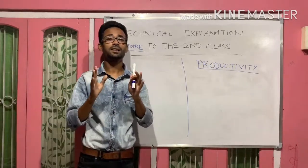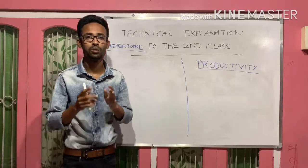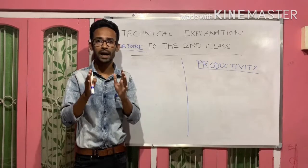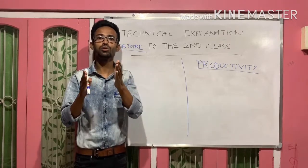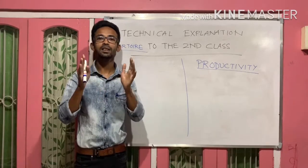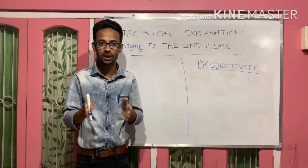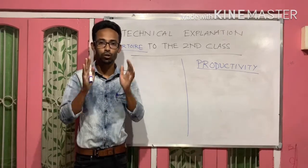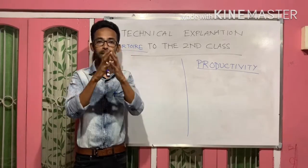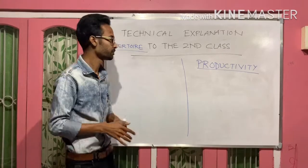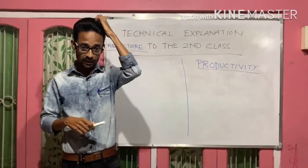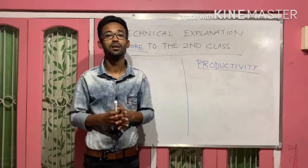You can define duality as: Duality is that unique property of human language which allows us to use the language economically by combining distinct sounds with distinct meanings. Now, coming to productivity.